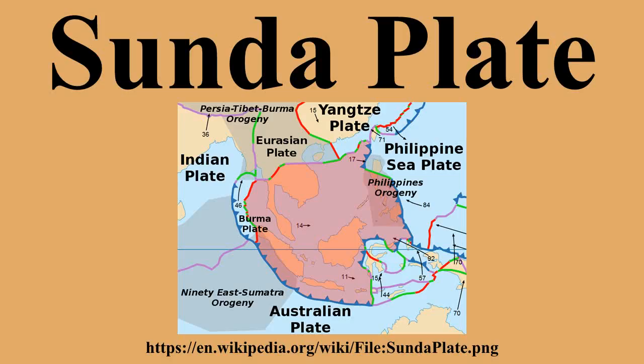The Sundar Plate is a minor tectonic plate straddling the equator in the eastern hemisphere, on which the majority of Southeast Asia is located. The Sundar Plate was formerly considered a part of the Eurasian Plate, but GPS measurements have confirmed its independent movement at 10 mm/year eastward relative to Eurasia.